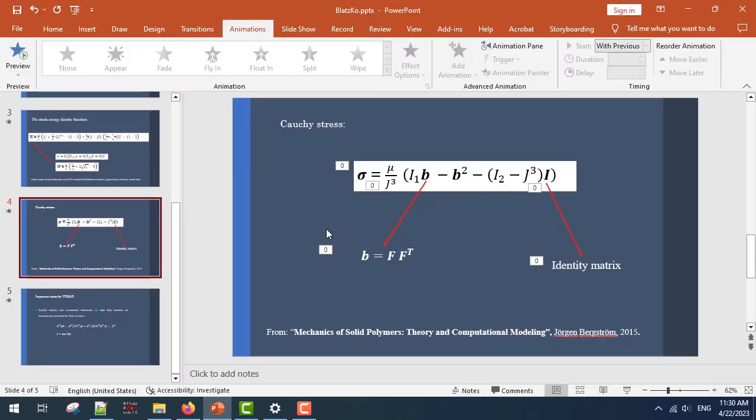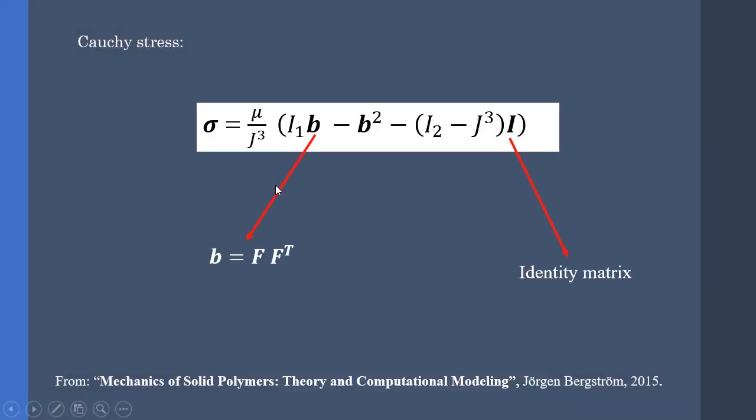If you look at the Cauchy stresses for the Blatz-Ko model, the only input from the user is going to be the shear modulus or mu. Next, we are going to calculate the b, b2 matrix, and from them we are going to calculate I1, the first invariant, the second invariant, and the determinant of the deformation gradient and construct the Cauchy stress matrix.